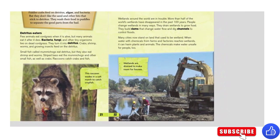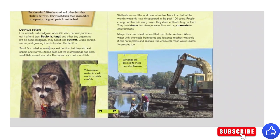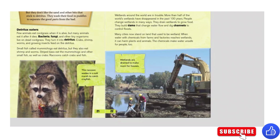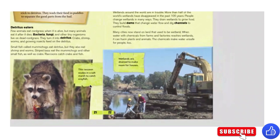Detritus eaters. Few animals eat cord grass when it's alive, but many animals eat it after it dies. Bacteria, fungi, and other tiny organisms live on dead cord grass and turn it into detritus. Crabs, shrimps, worms, and growing insects feed on detritus. Small fish called mummichogs eat detritus but also eat shrimp and worms. Striped bass eat the mummichogs and other small fish, as well as crabs. Raccoons catch crabs and fish — this raccoon wades in a salt marsh to catch crayfish.